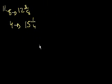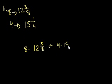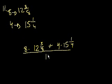So the sum of the weights of these 8 packages, we know their average. So the sum of the weights is going to be 8 times 12 and 3/8. Times 12 and 3/8. That's the sum of all of these. Plus 4 times the weight of these. Plus 4 times 15 and 1/4. And we're going to divide that by the total number of packages. Divided by 12.